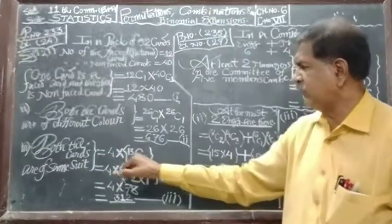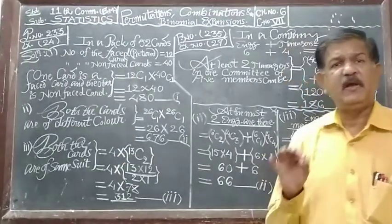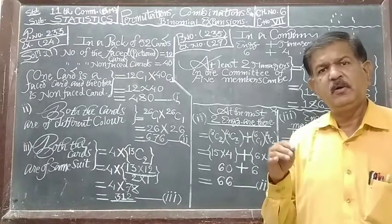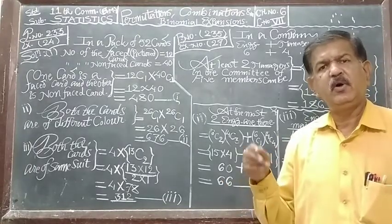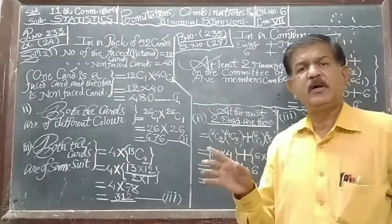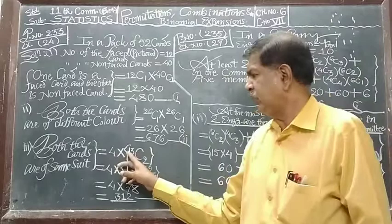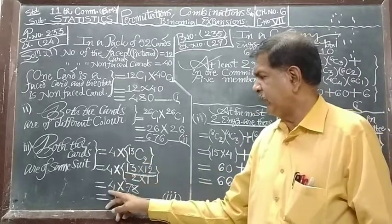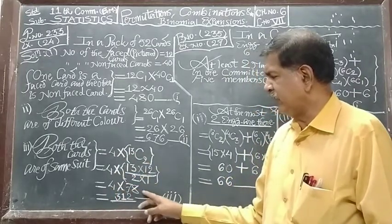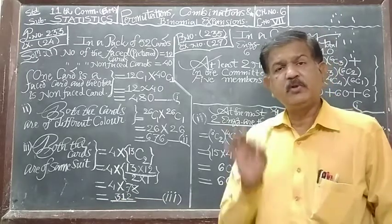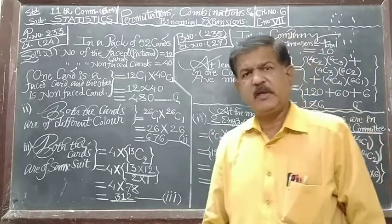4 x 13C2, because each suit has 13 number of cards, whatever may be: club, diamond, heart, or spade. 13 number of cards in each suit. Same way there are 4 number of suits. 13C2 into 4, 13 into, means 4 into 78, answer will be 312. That both the cards are of the same suit, same type.